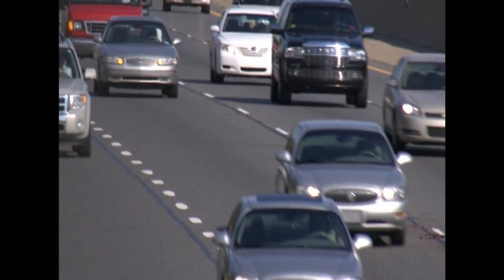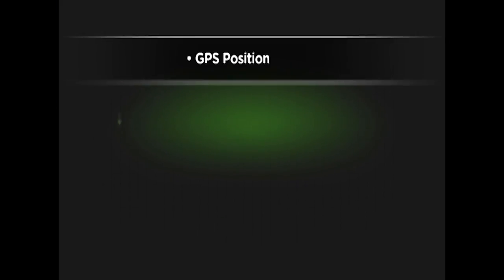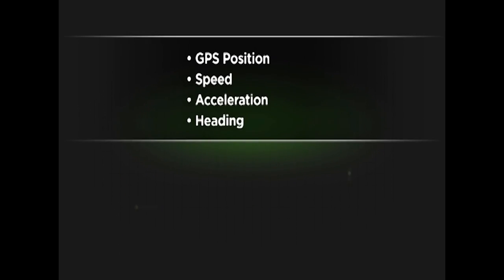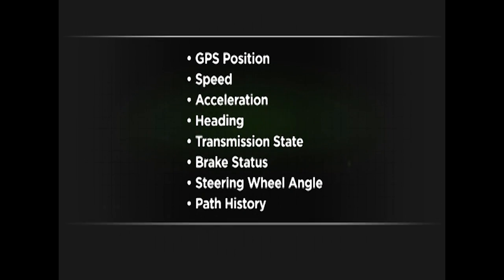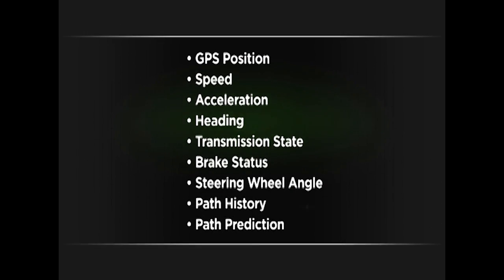Transmitted messages common to all vehicles include each vehicle's current GPS position, vehicle speed, acceleration, and heading. Vehicle control information such as the transmission state, brake status, and steering wheel angle, as well as the vehicle's path history and path prediction.